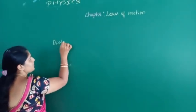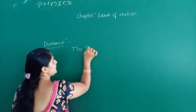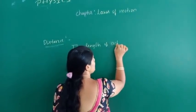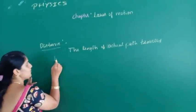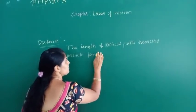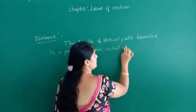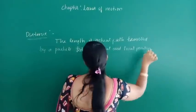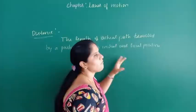First we define distance, or distance traveled by an object or a particle. Distance is the length of the actual path traveled by a particle between initial and final position.